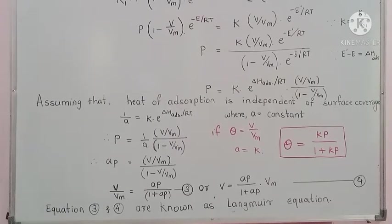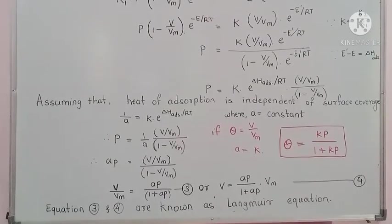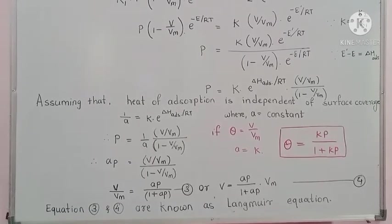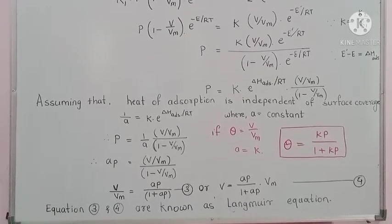The third assumption is not strictly true because real surfaces are quite heterogeneous, so the affinity for gas molecules differs at different sites. Crystal imperfections or cracks lead to the creation of different sites on the surface, making the assumption false. The fourth and fifth assumptions are also not strictly valid at higher pressures. Therefore, after the Langmuir adsorption isotherm, the BET theory was proposed by Brunauer, Emmett, and Teller, which we will discuss in the next video.